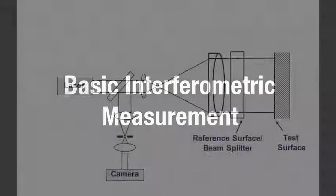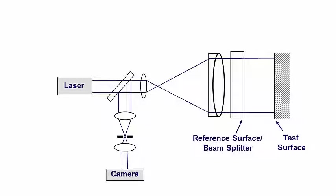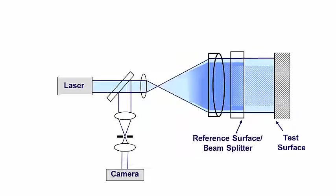In a FIZO interferometer, the reference surface doubles as a beam splitter, with one beam directed to the test surface and another to the high-quality reference.